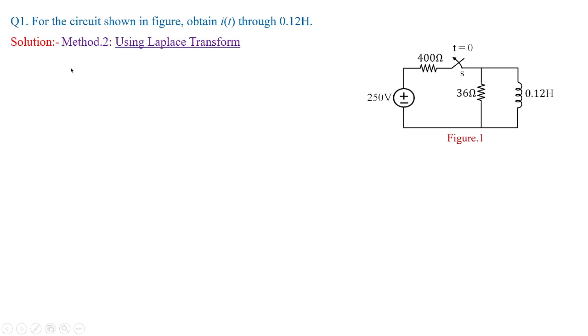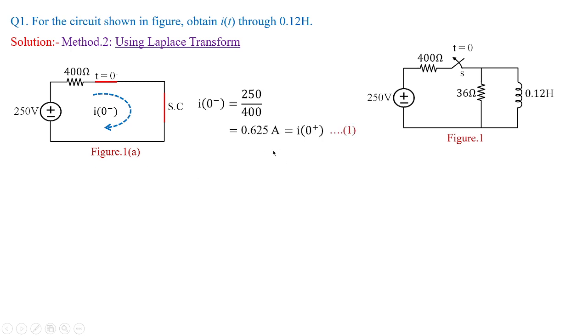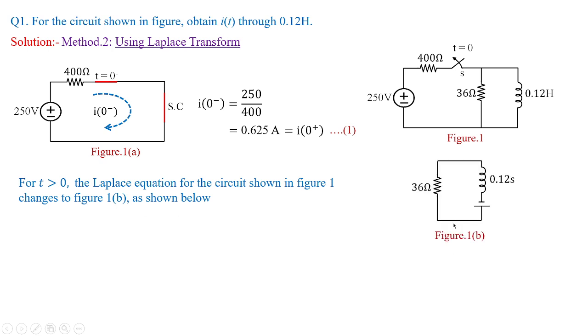Our main intention is to solve the problem using Laplace transform approach. Figure 1 is changed to Figure 1a and we know that the value of current before and after switching is 0.625 amperes. Now, using Laplace transform we need to solve the problem. For t greater than 0 the Laplace equation for the circuit shown in Figure 1 changes to Figure 1b as shown in this circuit.